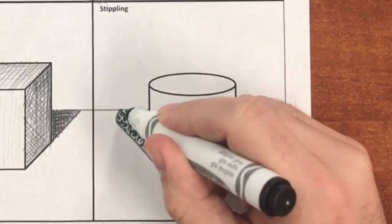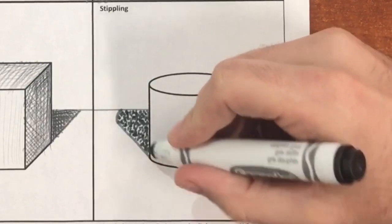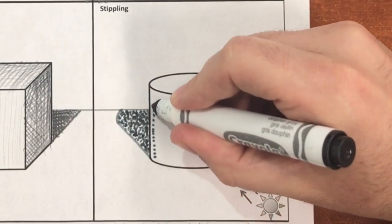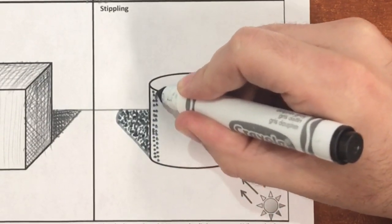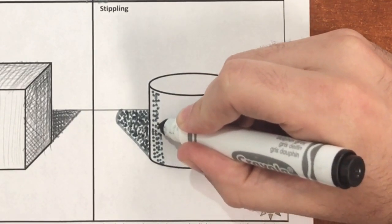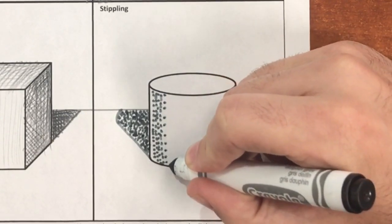For stippling, remember that you're going to use a higher concentration of dots in order to produce darker tones and provide more space in between your dots and less concentration in order to produce lighter regions.